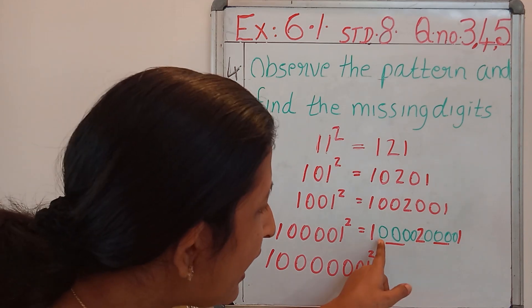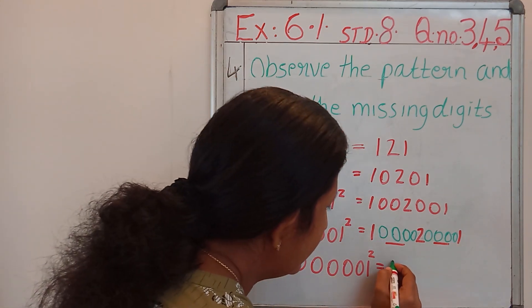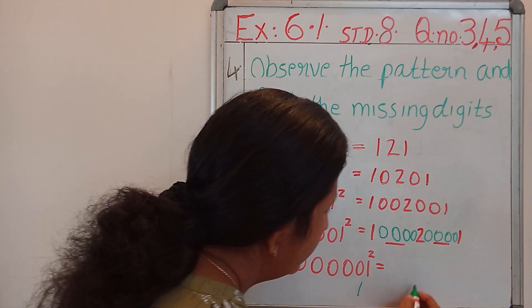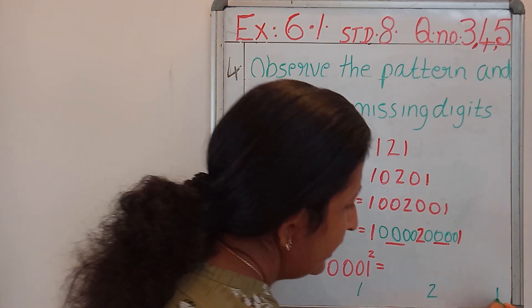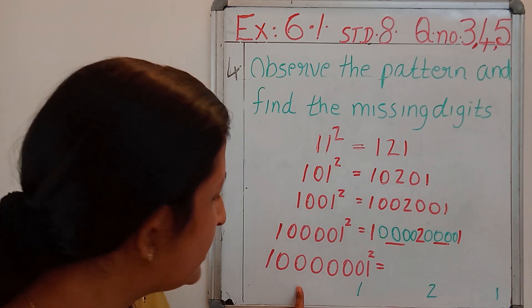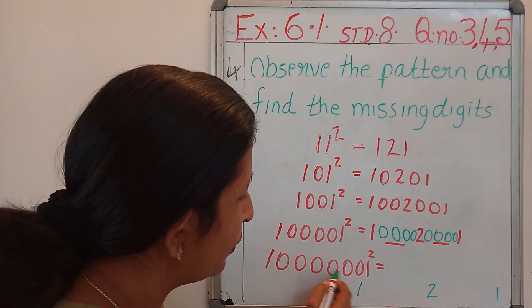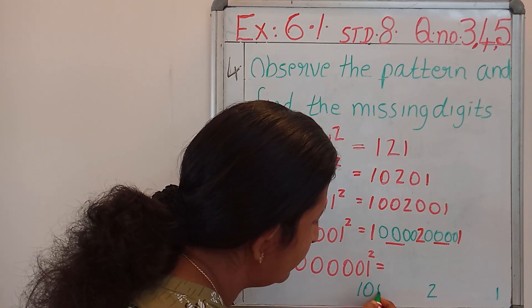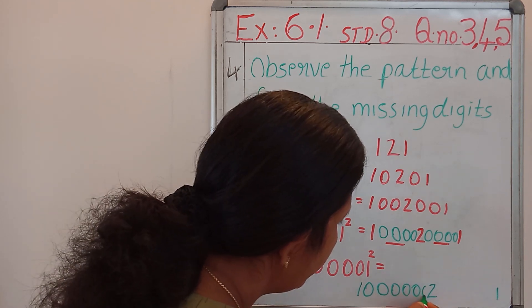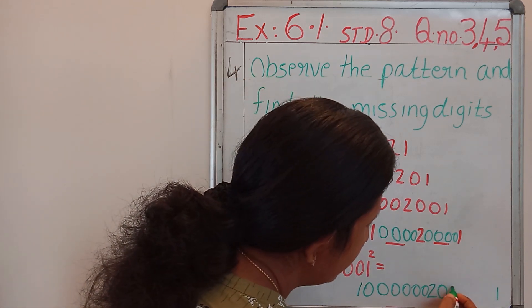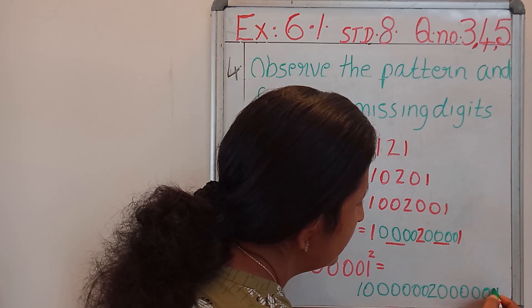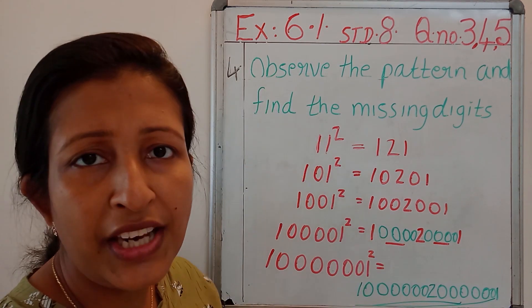Here we have to write 1, 2, 1, like this. In between 1 and 2 how many zeros should we write? For that we have to count how many zeros are here: 1, 2, 3, 4, 5, 6 zeros. So in the same way here we should write 6 zeros. In between 2 and 1 how many zeros? 6: 1, 2, 3, 4, 5, and 6. So this is the answer. I think this is very easy for you.